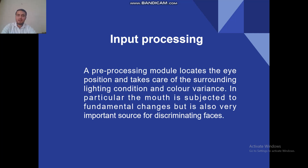The second step is input processing. In this, a preprocessing module locates the eye positioning and takes care of lighting condition and color variance. In particular, the mouth is subjected to fundamental changes but is also a very important source for discriminating faces. In this step the preprocessing part is concluded — it will remove all the noise in the image and extract the important features.